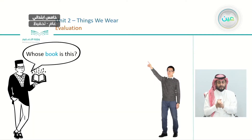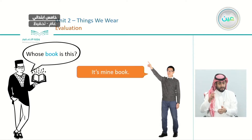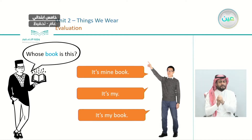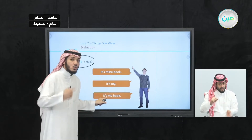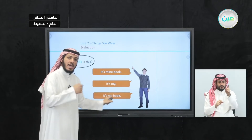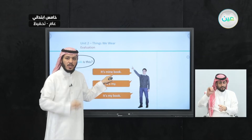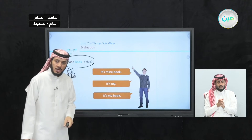Again, a man has a book. 'Whose book is this?' Is it 'It's mine book,' 'It's my,' or 'It's my book'? It's my book — correct! If you use 'my,' you have to use a word after it: my book, my hat, my bag. But if you use 'mine,' don't use any word after — just 'It's mine.'